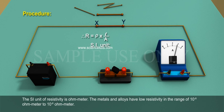The SI unit of resistivity is ohm meter. The metals and alloys have low resistivity in the range of 10 to the power of minus 8 ohm meter to 10 to the power of minus 6 ohm meter.